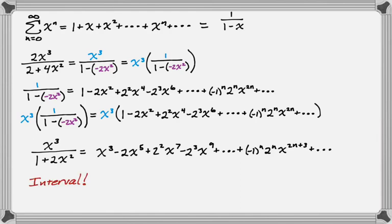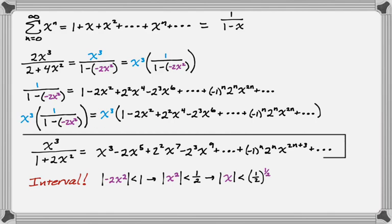But I do have to worry about the interval. I know that the absolute value of that r that I had has to be less than 1, which means the absolute value of x squared has to be less than 1 half, which means that the absolute value of x needs to be less than 1 half to the 1 half. Here's my final answer, which I built term by term this time.